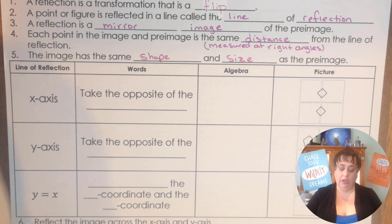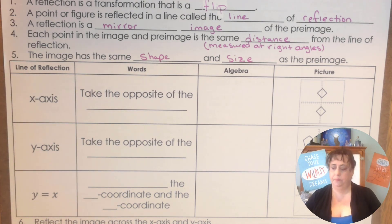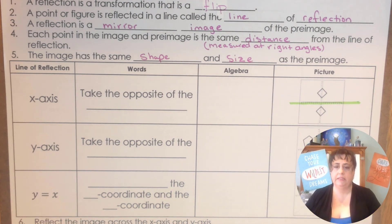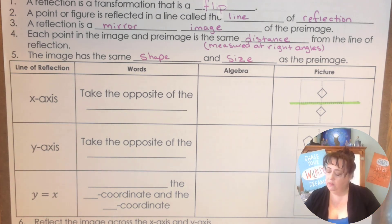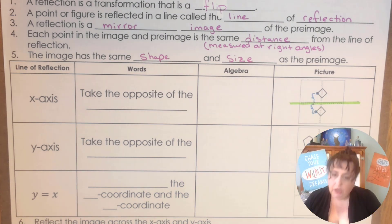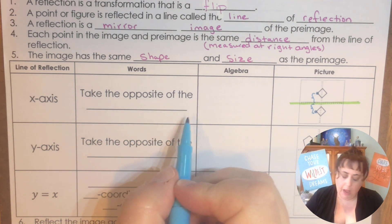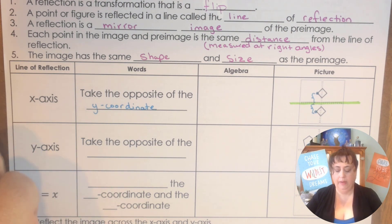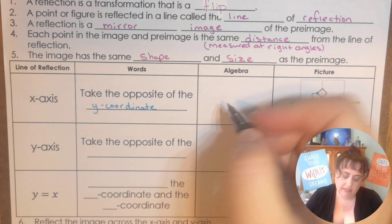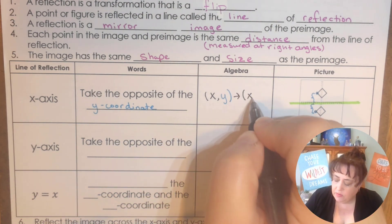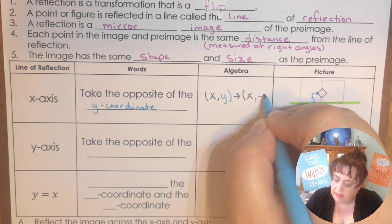When we look at an X-axis line of reflection, that means we are going to reflect across the X-axis. The points are going to be equal distance — this point and this point are equal distance to the X-axis. So we're going to take the opposite of the Y coordinate. In algebra, that means the X stays the same, but the Y is going to be the opposite.